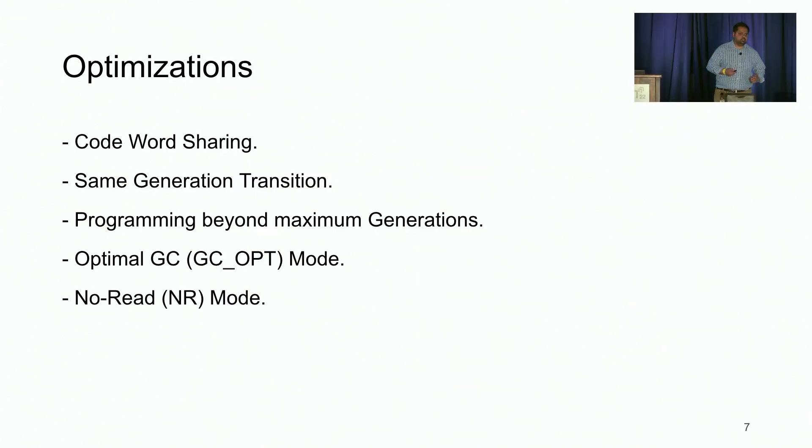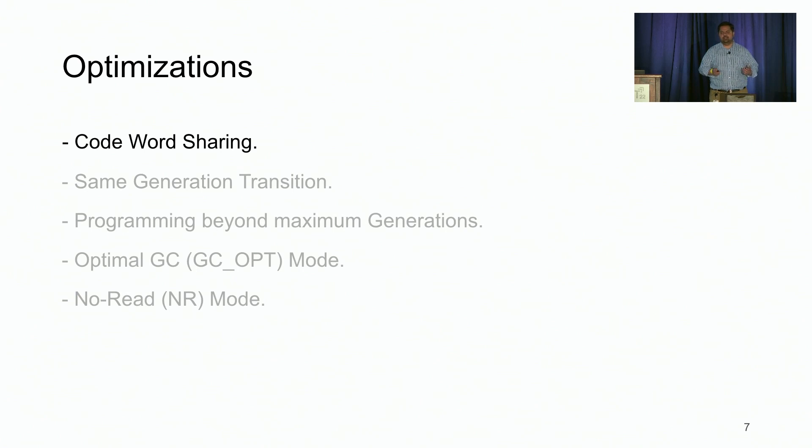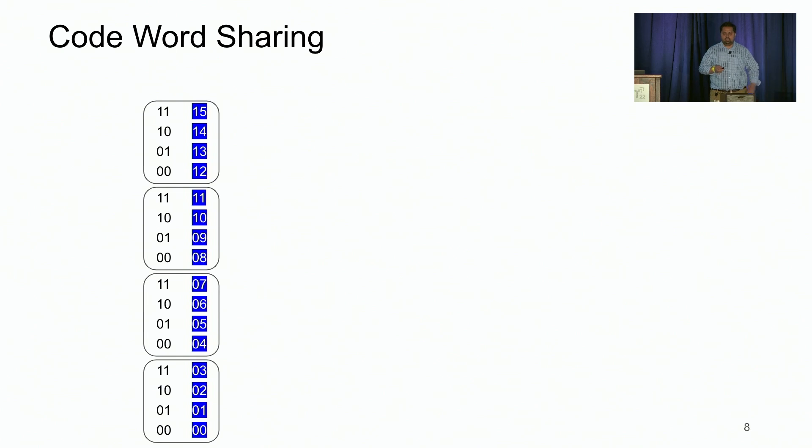We propose a number of optimizations to this WOM V coding scheme, the details of which can be found in the paper. In this talk, I'm going to talk about one such optimization, which we call code word sharing. Let us revisit our WOM V(2,4) code example. And here, instead of looking at four generations, let's just look at the first two generations of WOM V coding scheme.